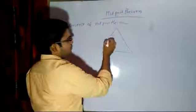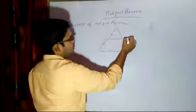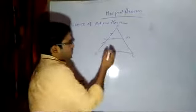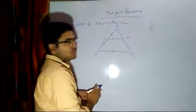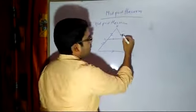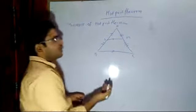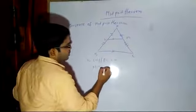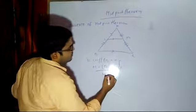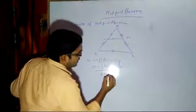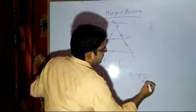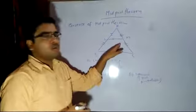In the converse of midpoint theorem, you will have one triangle again. This line will be running parallel — this is L, this is M, this is B, C, A. They will say that LM is running parallel to BC and this side is equal to this side — AL is equal to LB. Then they will ask you to prove that AM is equal to MC. You will say: since LM is parallel to BC and AL is equal to LB — given — therefore AM will be equal to MC by converse of midpoint theorem. Only one statement you have to use and then say: by converse of midpoint theorem, these two sides will be equal.